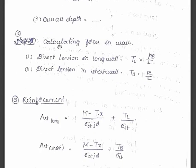Next part is calculating the forces in the walls. So direct tension in the long wall is given by this formula T_L. Here see, Pb/2. When you are calculating in the long wall we have to consider the short length. Similarly for direct tension in the short wall we have to consider T_B equals Pl/2. For B we are considering the length, so vice versa we have to take.